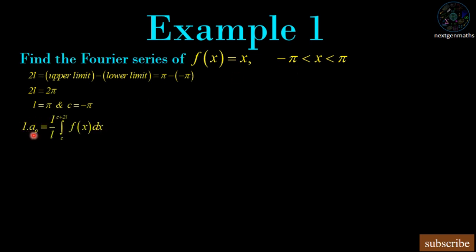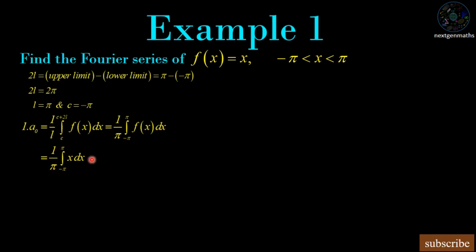We begin with the first Fourier coefficient a₀ = (1/L)∫[c to c+2L] f(x) dx. Substituting L = π and c = −π, we get (1/π)∫[−π to π] x dx. Since f(x) = x is an odd function and we are integrating an odd function over the symmetrical limit −π to π, this integral equals 0. Therefore a₀ = 0.